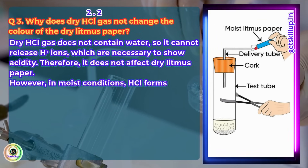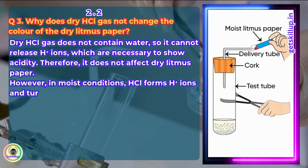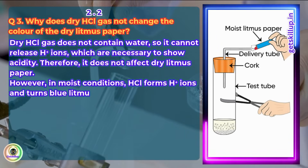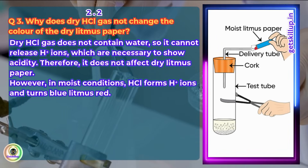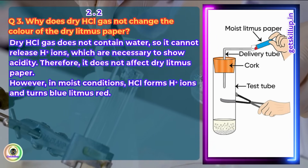However, in moist conditions, HCl forms H+ ions and turns blue litmus red.